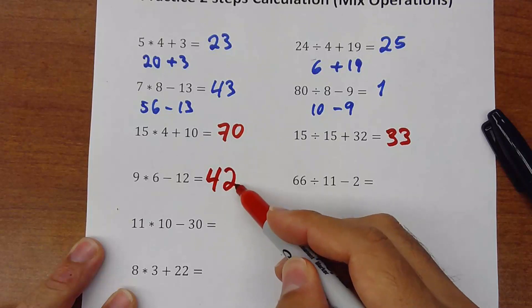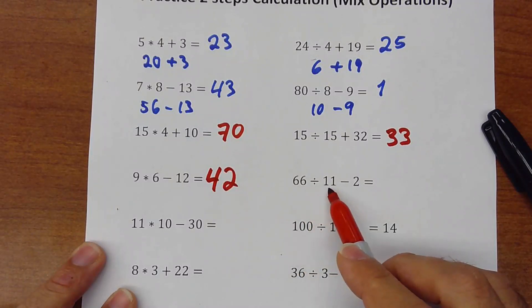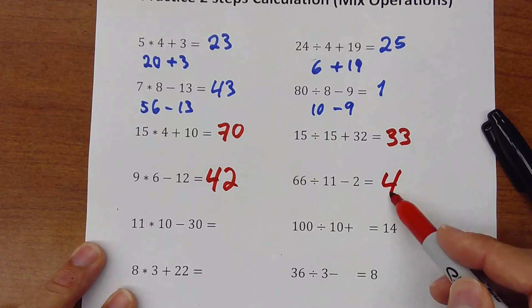Okay, we have a 42 here. This one, 66 divided by 11 is just 6, minus 2 is 4. Okay.